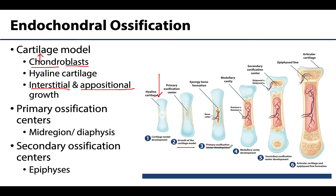The primary ossification centers are typically the first and are typically located in a central location associated with the diaphysis, so kind of in this middle portion. As the primary ossification center grows toward the end of the bone, our good friend the osteoclast will actually begin breaking down some of the middle portions of the bone to start forming the medullary cavity. With time, often around the time of birth, secondary ossification centers will arise at the epiphyses, once an epiphyseal artery enters into the region. These are going to be referred to as secondary ossification centers.